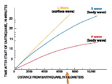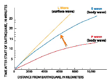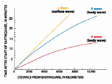So here you go — distance from the earthquake. And here's P waves. They're the fastest, right? That's the first thing that's going to get to you. And then here's S waves. It takes longer for the S wave to get there for any given distance.